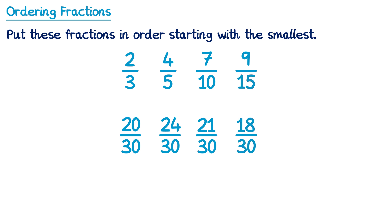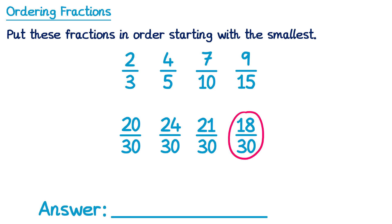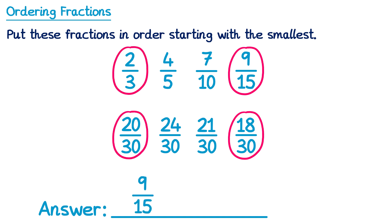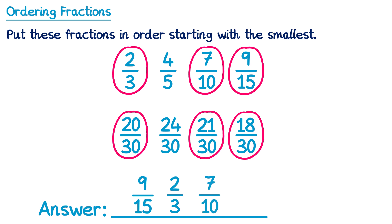So we've now converted all 4 fractions into equivalent fractions with the same denominator. Writing the answers on the answer line, the smallest is 18 thirtieths, which was originally 9 fifteenths. The next smallest is 20 thirtieths, which was two thirds. Then 21 thirtieths, which was seven tenths. And finally the largest was 24 thirtieths, which was four fifths. So we've now put these fractions in order of size.